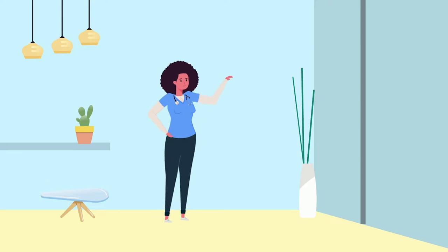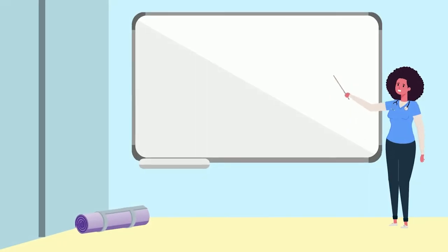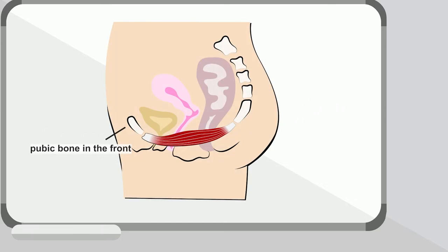The pelvic floor is one of the most important muscle groups in the body. It consists of three superimposed layers with three orifices for the urethra, the vagina, and the anus. It has the shape of a hammock and is suspended between the pubic bone in the front, the tailbone in the back, and the two sit bones.